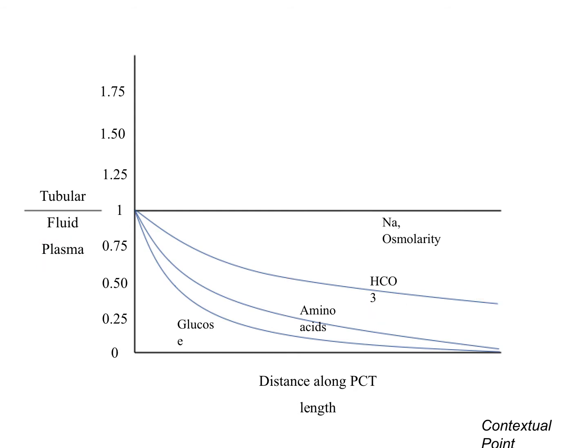Now the tricky and important part of this graph. As we can see, sodium is equal to one, or maybe a little bit higher than one. As we know, we are reabsorbing sodium in the proximal convoluted tubule — actually two-thirds of sodium is reabsorbed there. But we draw sodium at one. We are also reabsorbing bicarb, amino acids, and glucose, but we draw those below one, while sodium stays equal to one.